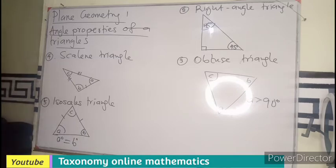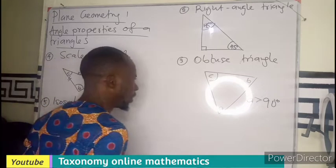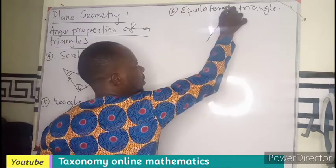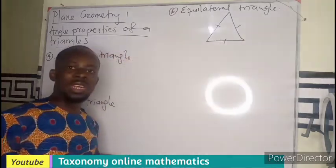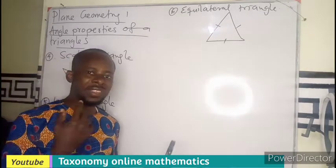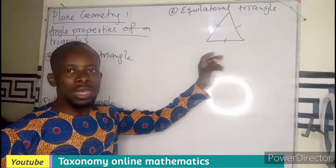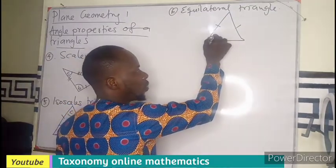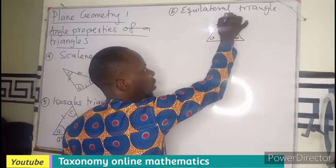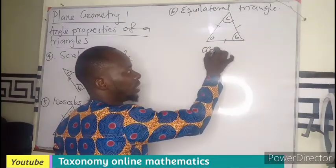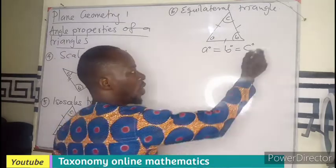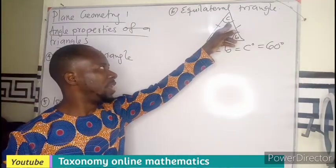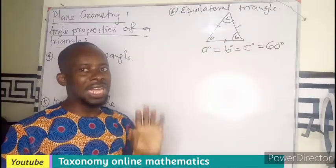An equilateral triangle has all its sides equal. If all the sides are equal, it also means all the interior angles are equal. So angle A equals angle B equals angle C, and each angle equals 60 degrees.